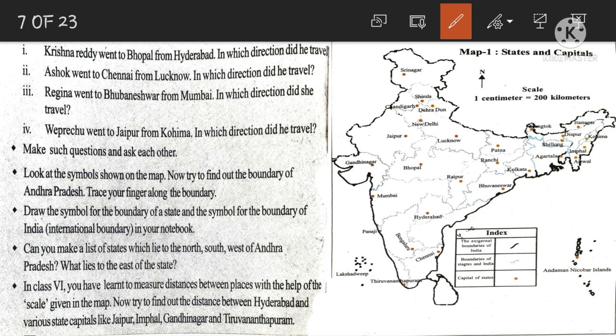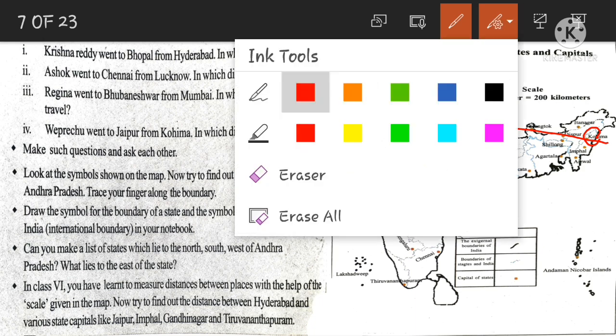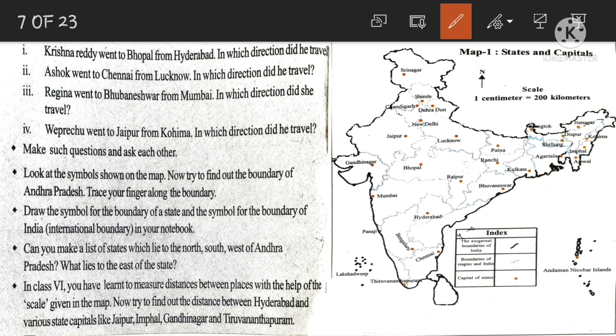Next question: Veprachu went to Jaipur from Kohima — in which direction did he travel? Kohima is the capital city of Nagaland and Jaipur is the capital city of Rajasthan. He travelled towards the left side on the map, so it is West direction. Veprachu travelled towards West.